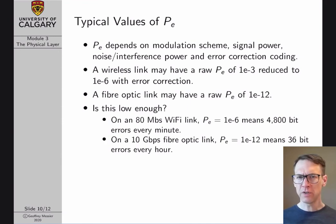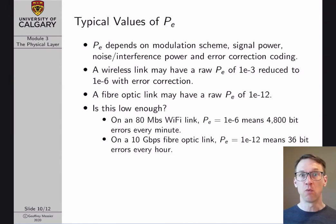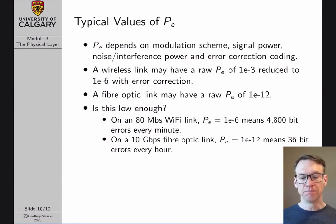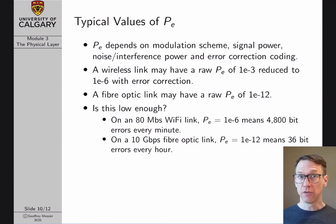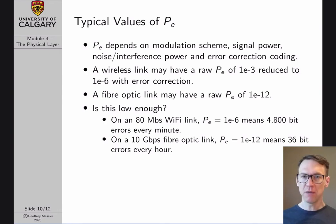What are typical probability of error values? They're actually surprisingly low. A wireless link might have a raw probability of error — meaning without error correction codes — of 1 × 10⁻³. With error correction codes, we might get it down to 10⁻⁶, so only one error every million bits transmitted. A fiber optic link can do even better: fiber optic links have incredibly low raw probability of error values of 10⁻¹², which is also typical of many wired communication systems like Ethernet.